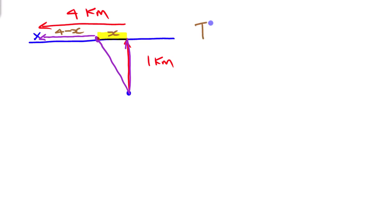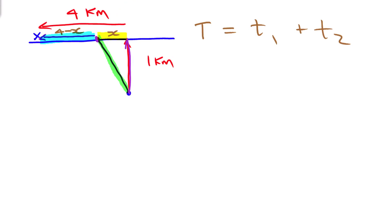I'm going to write a function for total time T. The total time has two legs: the rowing part (time one) and the walking part (time two), so T = t₁ + t₂. For the rowing part, I can figure out time one if I know distance and speed. The distance I can write in terms of x because it's a right triangle — I know one side is 1 km and the other is x, so the rowing distance is the square root of x² + 1 using the Pythagorean relationship.